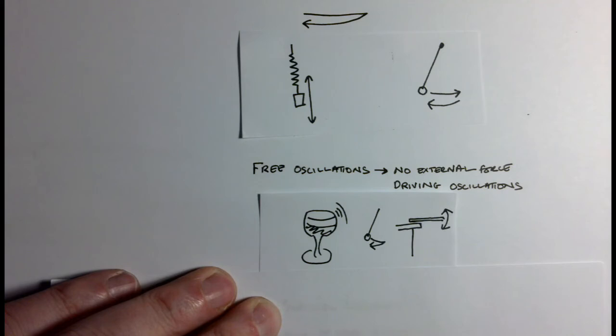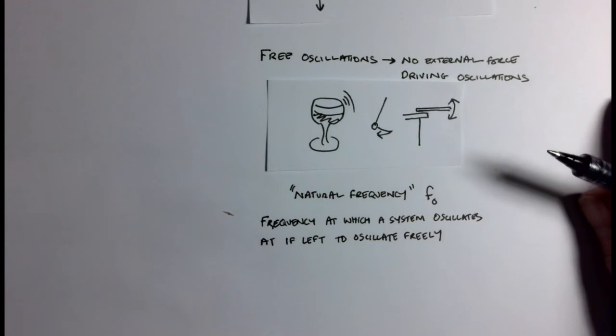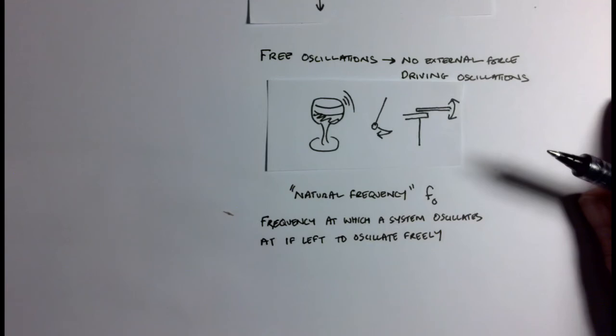Now, this frequency at which things oscillate at, if they're allowed to oscillate freely, is given a particular name. It's called the natural frequency, given the symbol F0, and it's the frequency at which a system oscillates if left to oscillate freely.